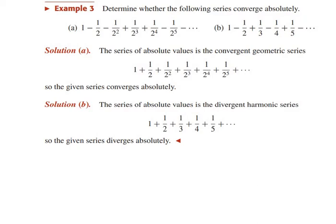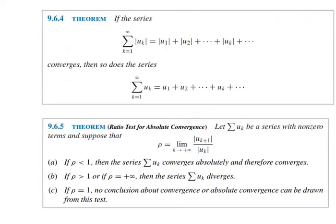Next is an important theorem: if the series sigma k=1 to infinity of |u_k| = |u1| + |u2| + ... converges, then so does the series sigma k=1 to infinity of u_k = u1 + u2 + ... + u_k + ... Based on this theorem, we move to the ratio test for absolute convergence.